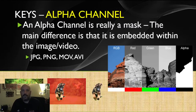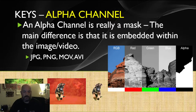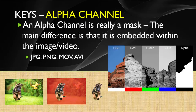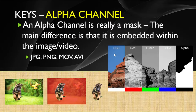Another type of keying is what's known as an alpha channel. An alpha channel is the same concept as a mask, with one exception: instead of having the black and white key as a separate file, the alpha channel is embedded within the video clip or the photograph itself. So this photograph — I can break it up and look at its layers of red, green, blue, and RGB combined, but I can also see an alpha channel. This particular alpha channel is in the shape of the rock formation, telling me I'm going to see the rock but not the blue sky.